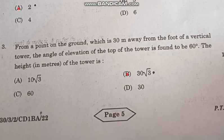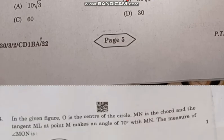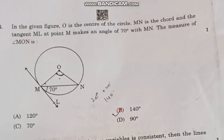Question number 3: From a point on the ground which is 30 meters away from the foot of a vertical tower, the angle of elevation of the top of the tower is found to be 60 degrees. The height in meters of the tower is correct answer option B, 30 root 3.